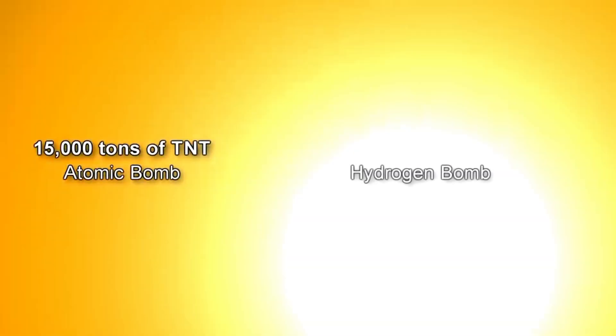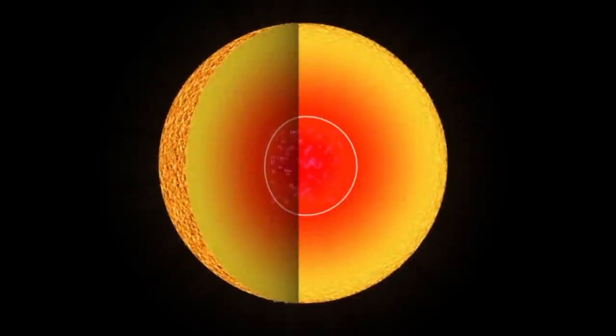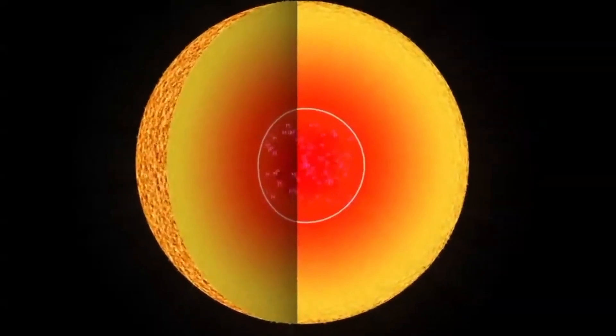Now let's see the details of the fusion reaction happening in hydrogen bomb. In fusion reaction, two hydrogen atoms make a single atom of helium and a neutron. An isotope of hydrogen called deuterium and tritium hydrogen isotope stick together and form helium. Same reaction is happening in our sun, which is making millions of tons of helium every second.